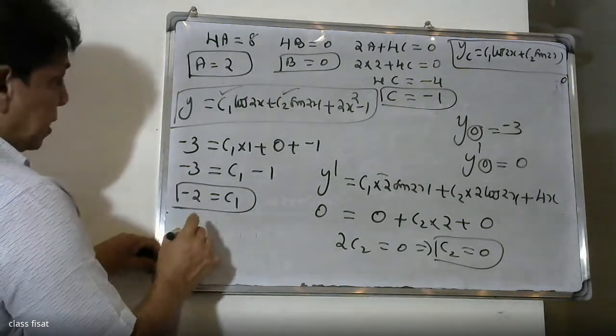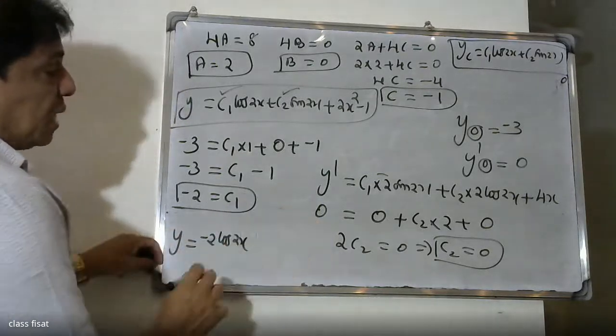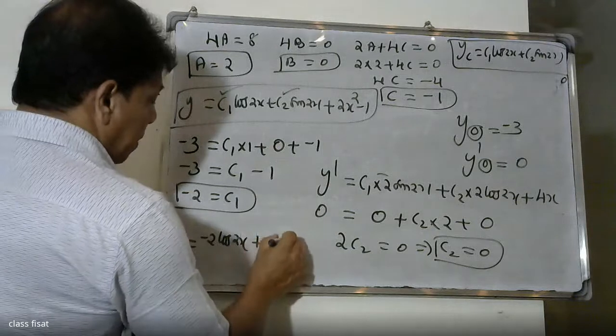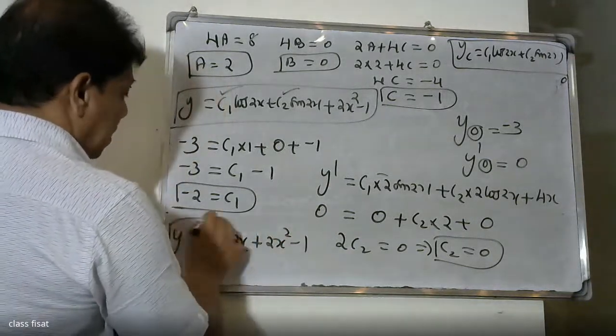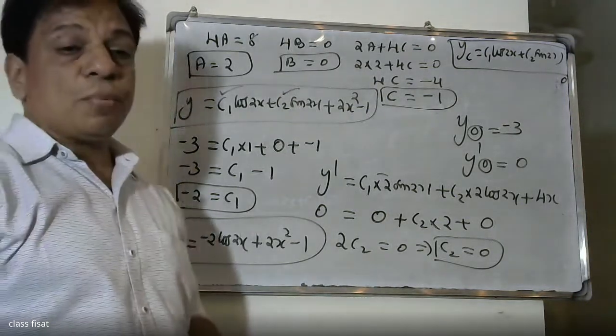Therefore the final solution is y = -2·cos(2x) + 2x² - 1. This solves the initial value problem using the method of undetermined coefficients.